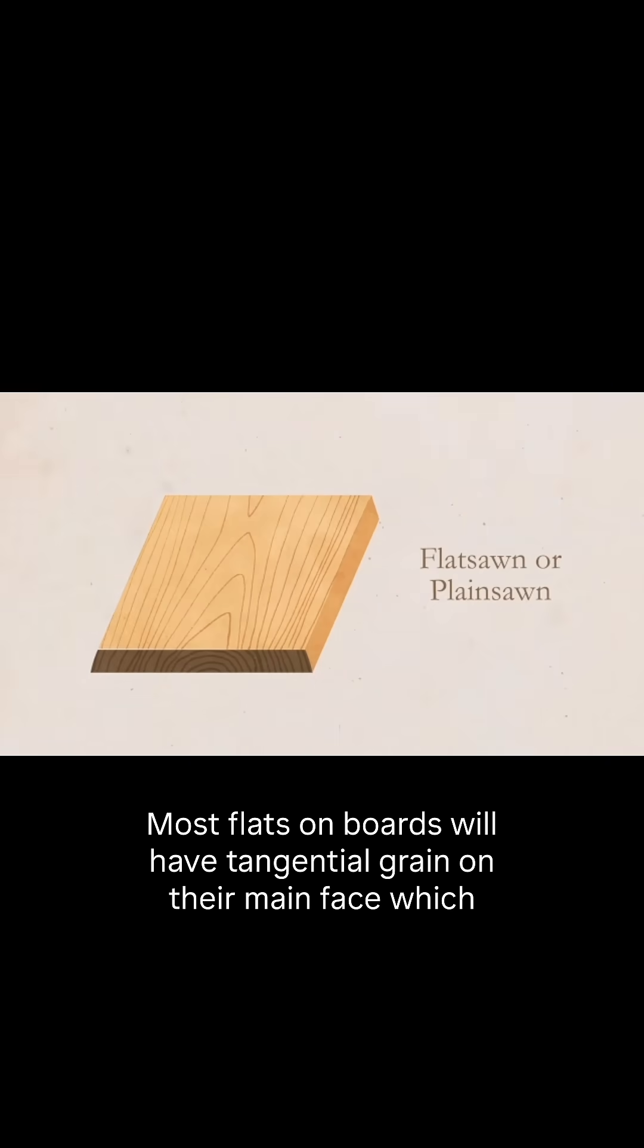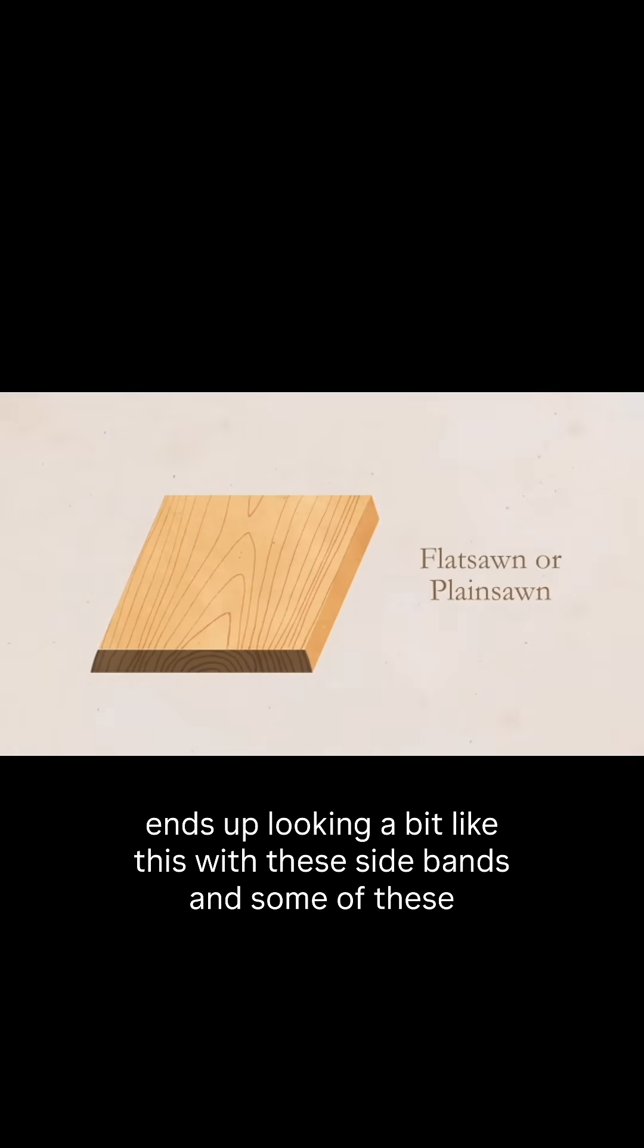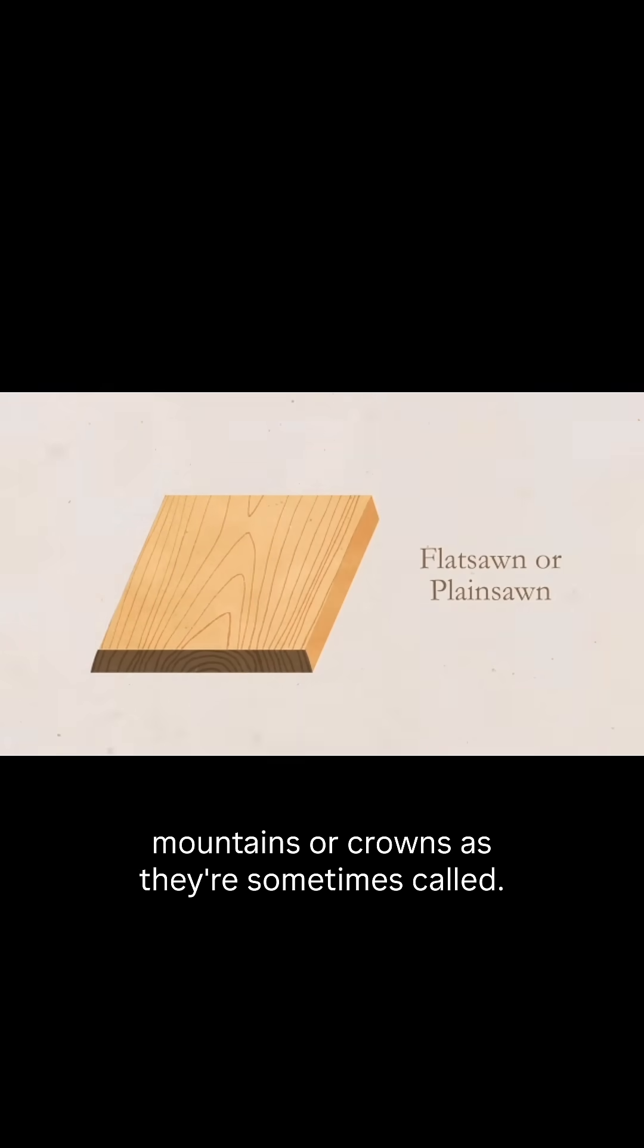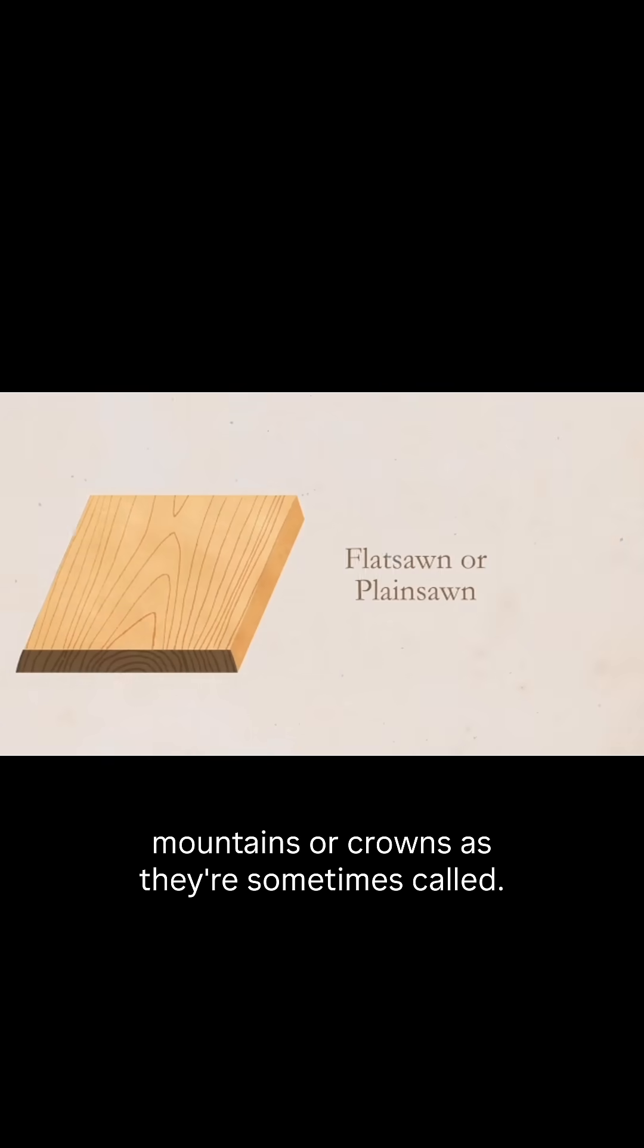Most flat sawn boards will have tangential grain on their main face, which ends up looking a bit like this, with these side bands and some of these mountains or crowns, as they're sometimes called.